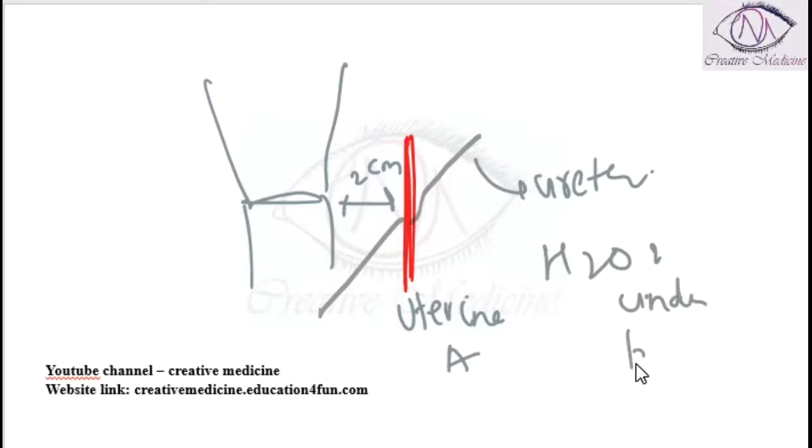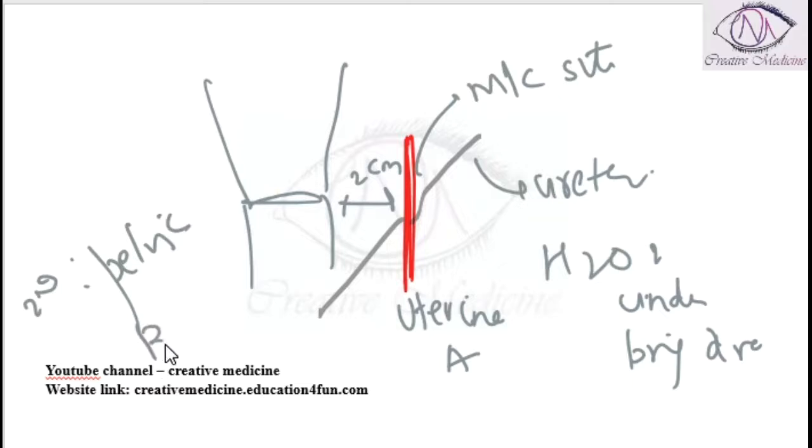The second most common site of ureteric injury is at the level of the pelvic brim, where ureter lies posterior to the ovarian artery.